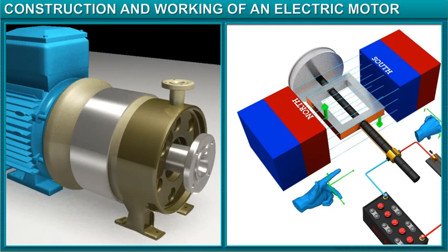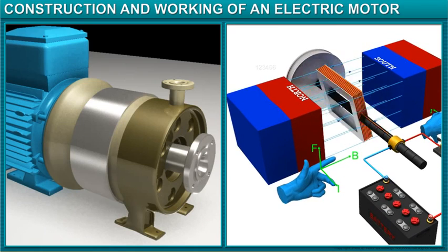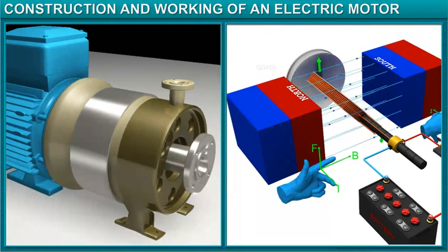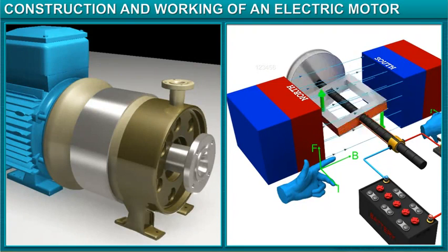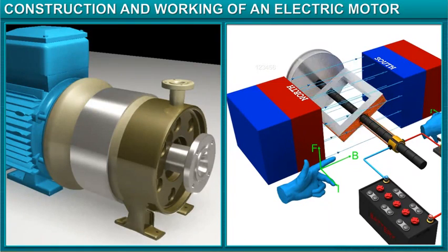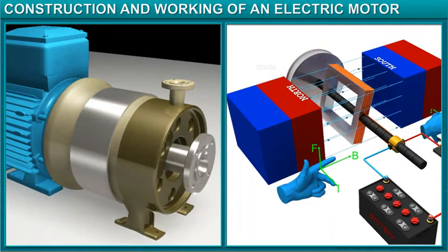An electric motor is built on the principle that a current-carrying coil rotates when kept in a strong magnetic field as it experiences torque.